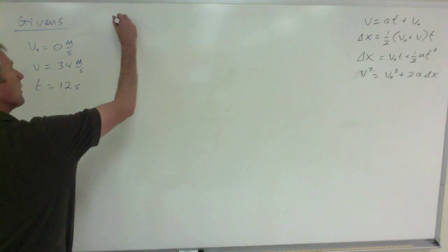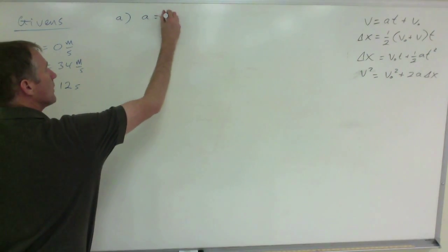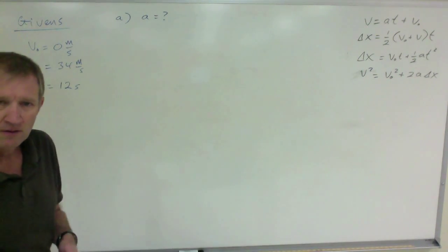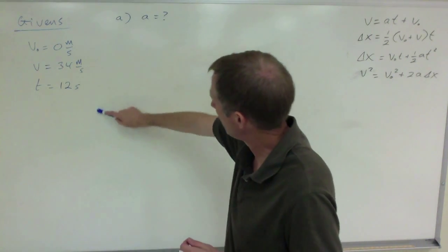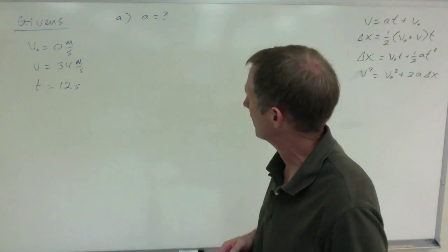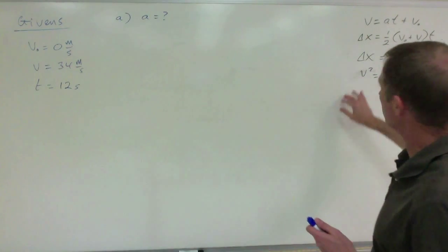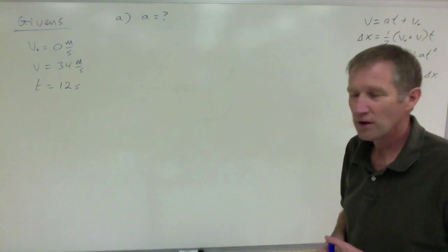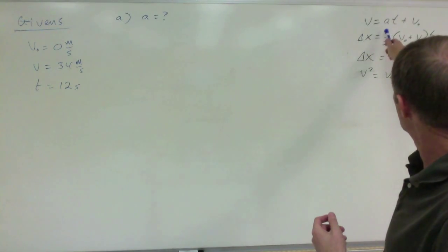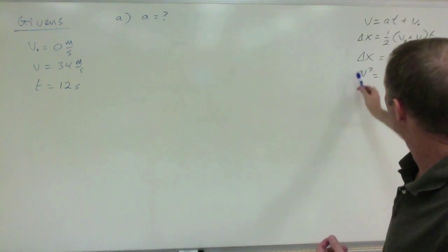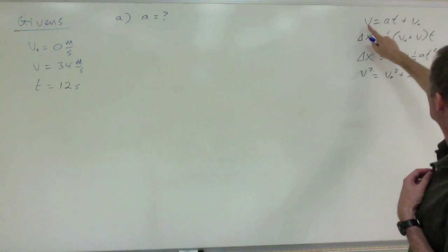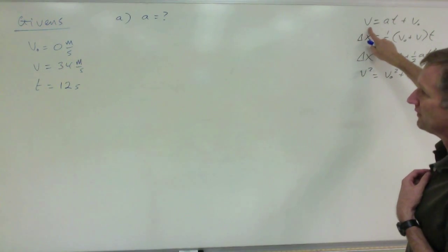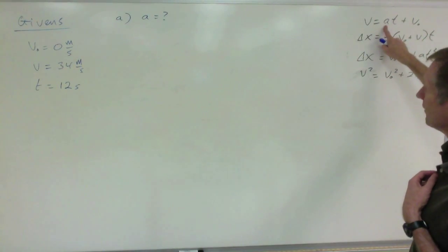Then for part A, we're looking for the acceleration. Once you have identified your givens and you've identified your unknown, here's your bank of equations. It's really just a question of matching those variables to whichever one fits. This is a fairly simple equation as far as these things go. So you know V sub zero, you know V, you know T, you're looking for A.